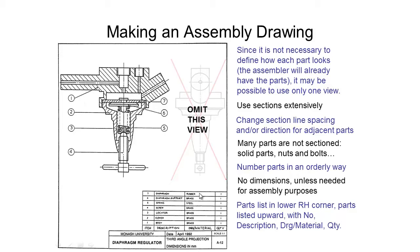We have the item number, then we have the description, then we have drawing number and material. So sometimes these are combined into one column however you can also have them separately. And then we have the quantity of each of these parts.